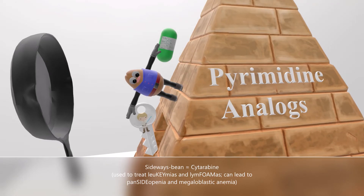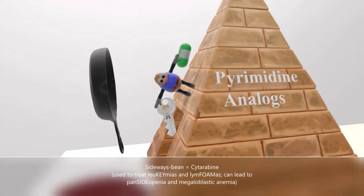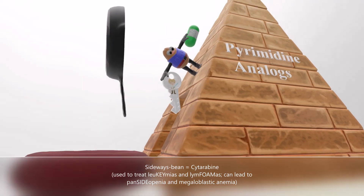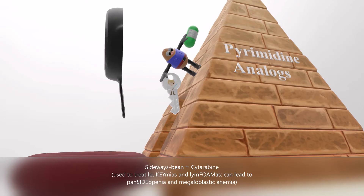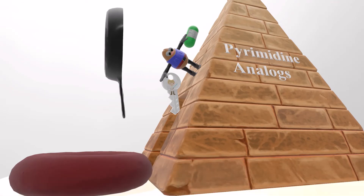There is a huge pan on its side — the pan on its side for pancytopenia, as Cytarabine can lead to pancytopenia. It can also lead to megaloblastic anemia, represented by the huge red blood cell cushioning the floor in case the sideways bean falls. So Cytarabine can lead to megaloblastic anemia and pancytopenia.